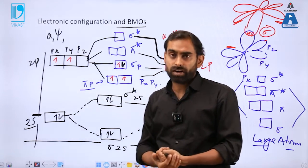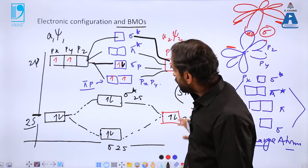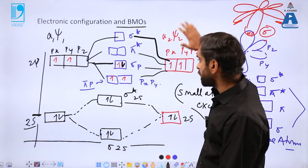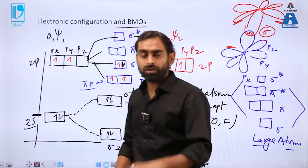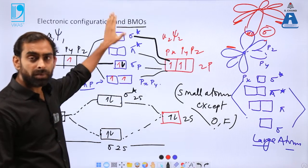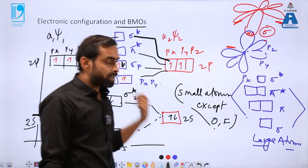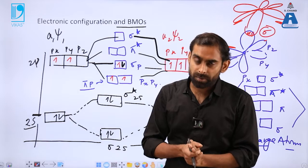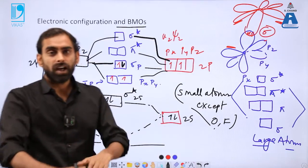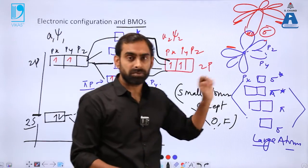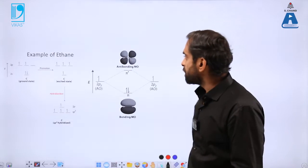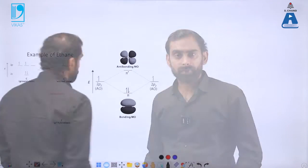To summarize the method: first write the atomic orbitals of the valence shell of each atom on either side of the diagram. In the middle, draw all possible molecular orbitals in ascending order of energy. Then fill electrons according to Hund's rule of maximum multiplicity — fill the lowest energy levels first and work upward. This is how energy level diagrams are constructed.